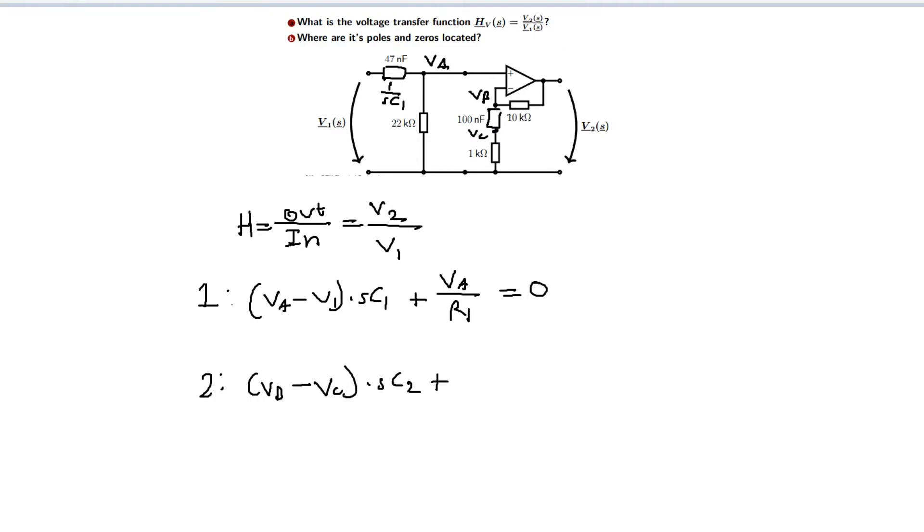Current also flows into the op-amp, so vb minus v2 over r2, this resistor is called r2. No current flows into the op-amp input, so this equals zero.